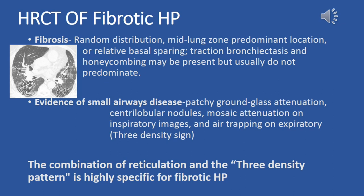The combination of reticulation and the three-density pattern — areas of ground glass opacity, decreased attenuation and vascularity, and normal lung — is highly specific for fibrotic HP. These HRCT findings, when observed together, can aid in the diagnosis of fibrotic hypersensitivity pneumonitis and help differentiate it from other interstitial lung diseases.